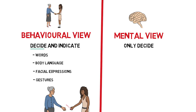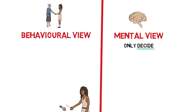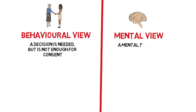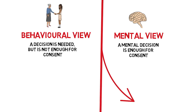The behavioural view can agree with the mental view that you need to make a decision to give your consent. If it weren't necessary to make any decision, then it would be possible for you to give consent by accident — for instance, by a slip of the tongue. But even if the behavioural view agrees that a decision is needed, it continues to disagree with the mental view, which claims that a mental decision is enough, by itself, for consent. This means that the mental view and the behavioural view imply different things about cases where someone makes a decision to consent but does not communicate this decision.